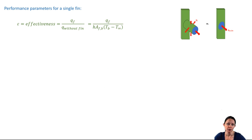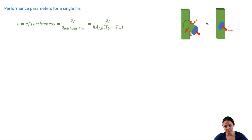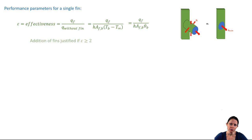The heat transfer rate of the fin depends on what assumption we use — case A, B, C, or D in table 3.4 in your book. The heat transfer rate without the fin is the heat transfer through the area of the base via convection. The area in the denominator is the cross-sectional area of the fin at the base. In general, if the effectiveness is greater than 2, the increase in material, size, and cost of adding the fin is justified.